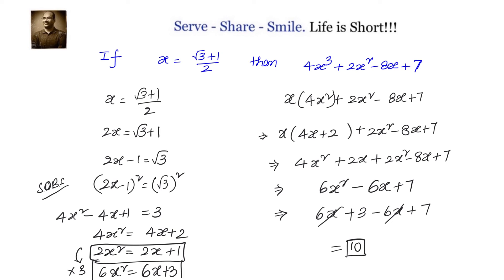So the value of 4x cubed plus 2x squared minus 8x plus 7 equals 10.